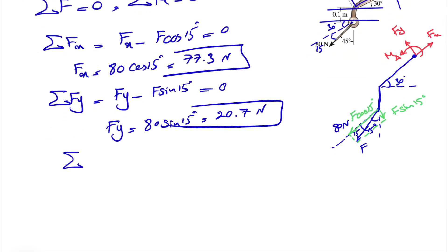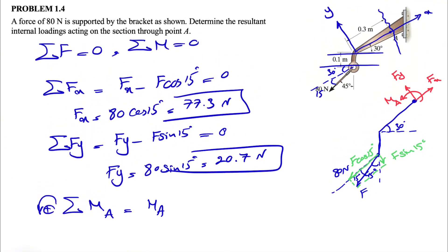There's only one unknown left and that would be the moment that we consider at point A. So last equation: sum of all moments about point A, counterclockwise positive as always. So we have the MA, and we're going to use our 2D shortcut that we have for finding the moment.